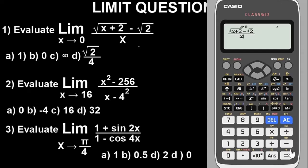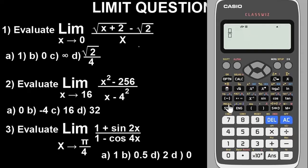Press equals and check the answer. We have 0.35. Option A says one — no. Option B says zero — no. Option C says infinity — no. So the answer has to be option D. Let's verify by converting the fraction: root 2 over 4, then press equals. Press SD to convert to decimal. That matches 0.35, confirming the answer is option D.